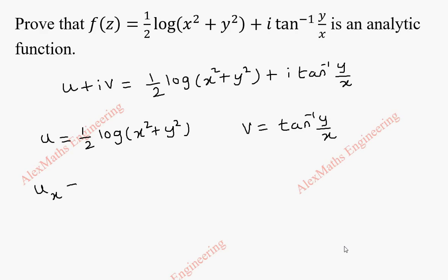Let's find u_x. It is a partial derivative with respect to x. Half is written as this, log derivative is 1 by x square plus y square, and derivative of x square is 2x. Y square will not come because it is treated as a constant. After cancelling this, we get u_x as x by x square plus y square.